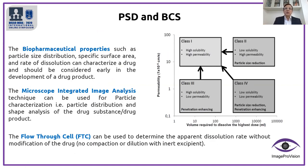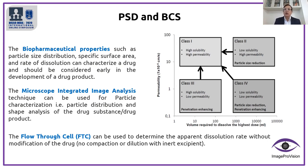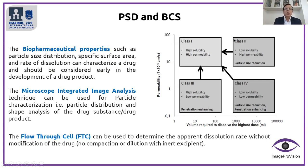Before going further, let us understand the correlation between particle size distribution and the pharmaceutical classification system. Class one has high solubility and high permeability. Class two has low solubility but high permeability. Class three has high solubility but low permeability, while class four has both solubility and permeability low. Each type aims to get toward the class one profile. I am going to focus more on the class two type of biopharmaceuticals.